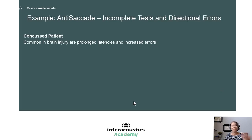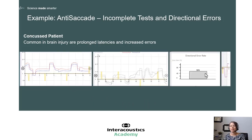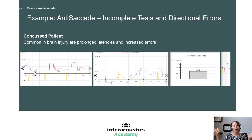Here's an example of a patient with directional error issues. Post-concussion is a classic example of patients that may experience difficulty with not only latency but also directional error rate. In the software, you'll see an increase in that percentage — this is from a patient that had a 53% directional error rate. Even looking at their eye tracing, you may see they were unable to complete the test, or that the stimulus shown in the yellow line and their eye movements in the red and blue lines are going in the same direction, which means they're making directional errors in the anti-saccade task.